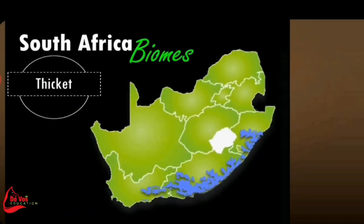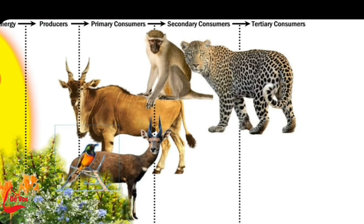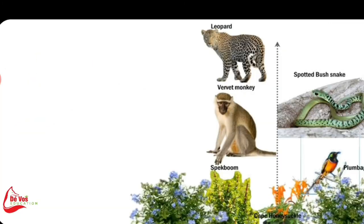The thicket biome stretches from the west coast of South Africa to KwaZulu-Natal, with the largest part situated in the Eastern Cape. The climate varies because it extends over such a large area. The soil is often shallow and varies from sandy loam to sandy clay soil that is rich in lime. The vegetation includes shrublands to low forests with many evergreen and succulent trees and shrubs. Many of the plants have thorns to protect themselves against grazers. Examples of plants include the spekboom, euphorbia, Cape honeysuckle and plumbago. Animal life includes the African elephant, kudu, vervet monkeys and bushbuck, with tertiary consumers such as the leopard and spotted bush snake hunting.